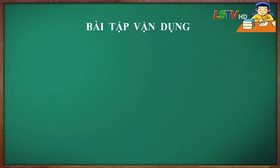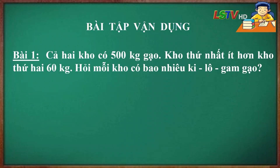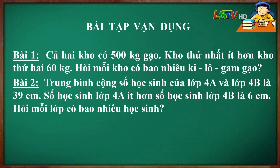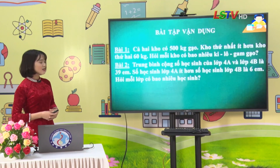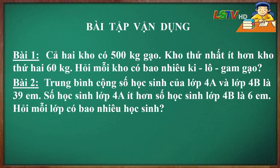Về nhà, các em tiếp tục vận dụng, giải các bài tập sau. Bài 1: Cả 2 kho có 500 kg gạo, kho thứ nhất ít hơn kho thứ 2 là 60 kg. Hỏi mỗi kho có bao nhiêu kg gạo? Bài 2: Trung bình cộng số học sinh của lớp 4A và lớp 4B là 39 em. Số học sinh lớp 4A ít hơn số học sinh lớp 4B là 6 em. Hỏi mỗi lớp có bao nhiêu học sinh?